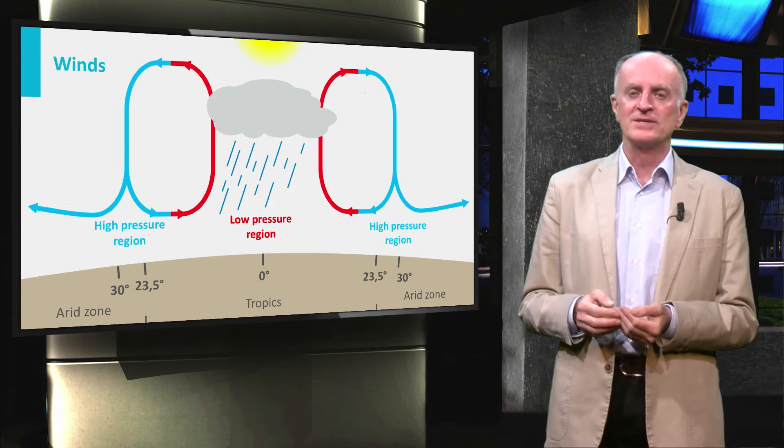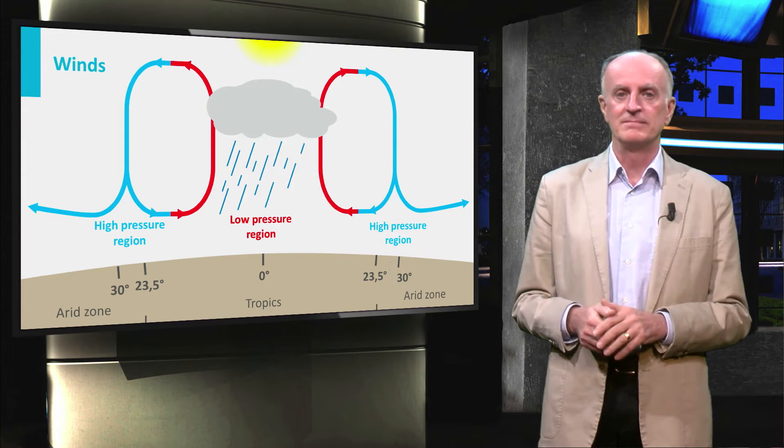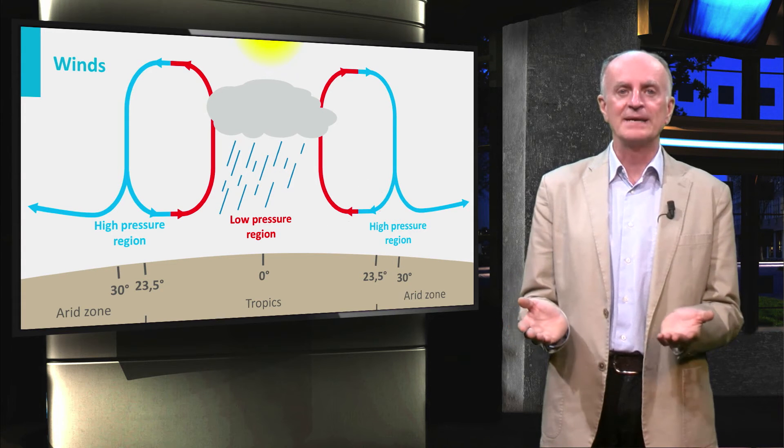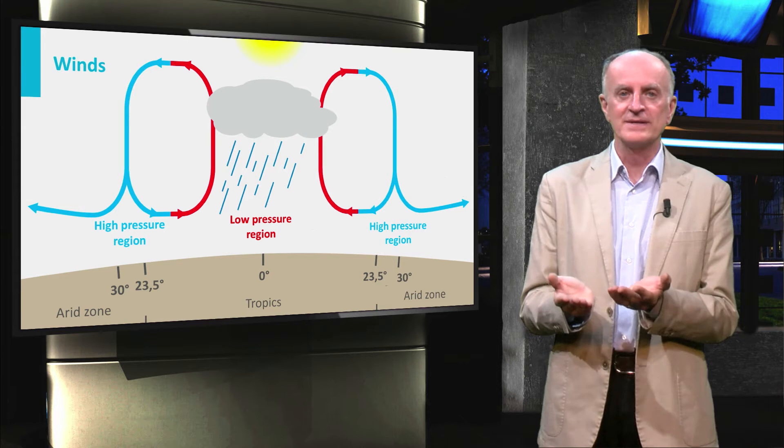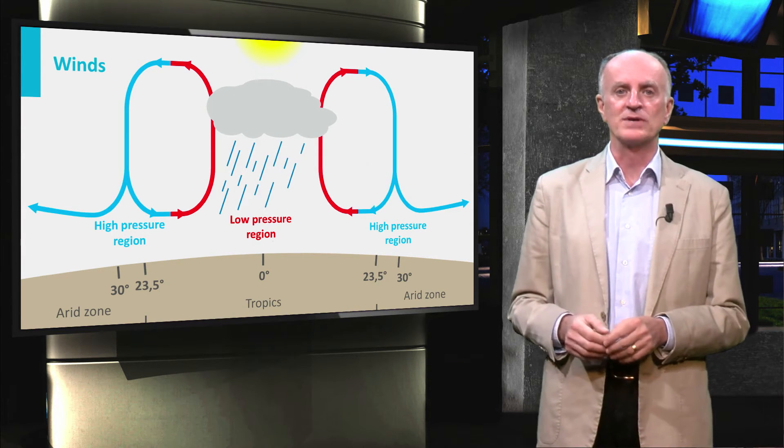The global pattern of wind circulation is controlled by the temperature distribution we have just seen. The rules are simple. The air overlying high temperature regions will become warmer, decrease its density, expand, and move upward, forming areas of low pressure.